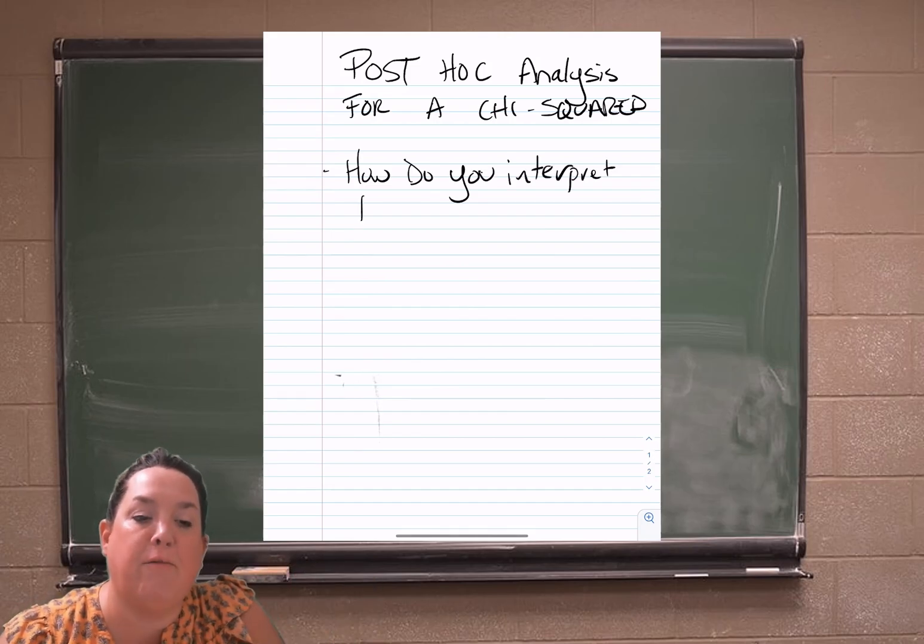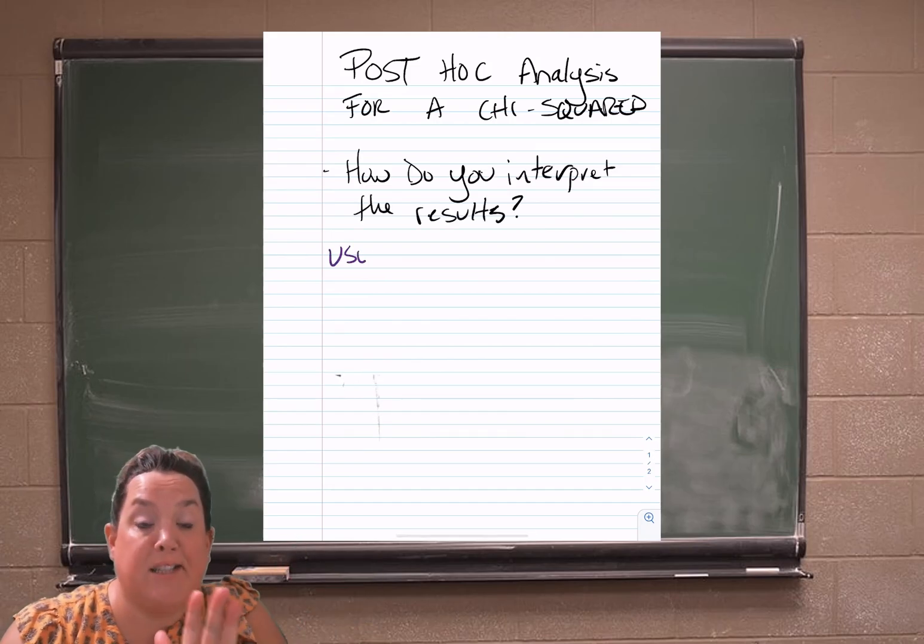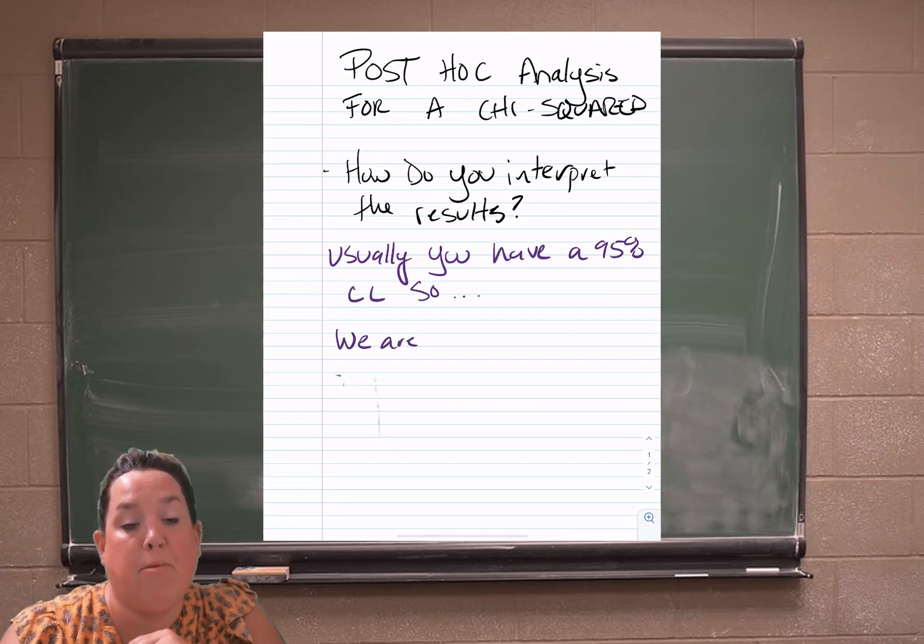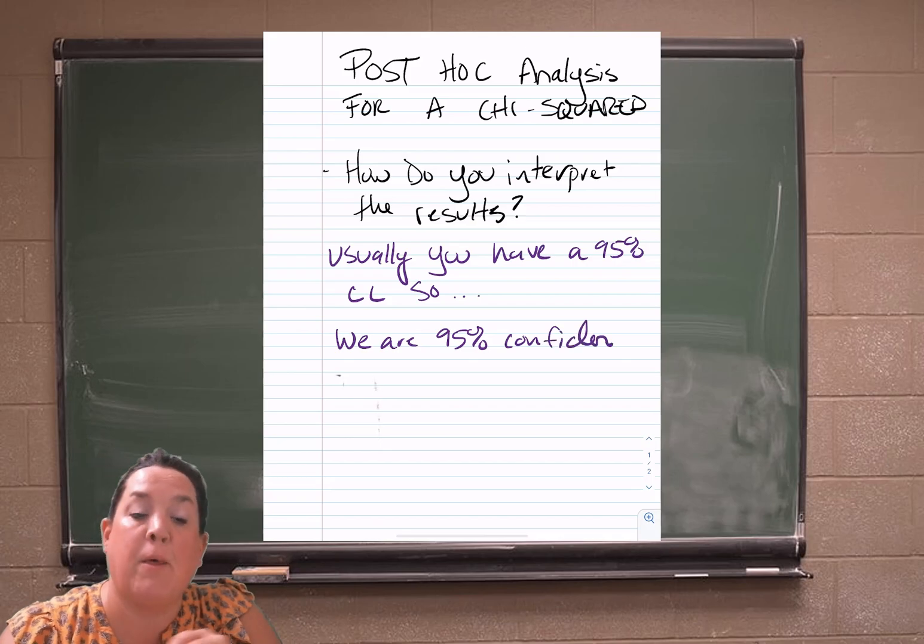So you'd say we are 95% confident that p sub one. So notice that that's not p hat. It's going to be the parameter p sub one or the population proportion for the first group and then the population proportion for the second group.